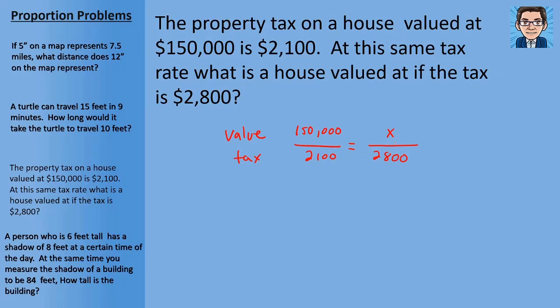So when we cross multiply, we're going to get $2,100 times x. That's this way. And then $150,000 times $2,800 is going to get us $420,000,000. Divide both sides by $2,100 and you're going to get x equals $200,000. So the value of the house that's paying tax of $2,800 is going to be $200,000.